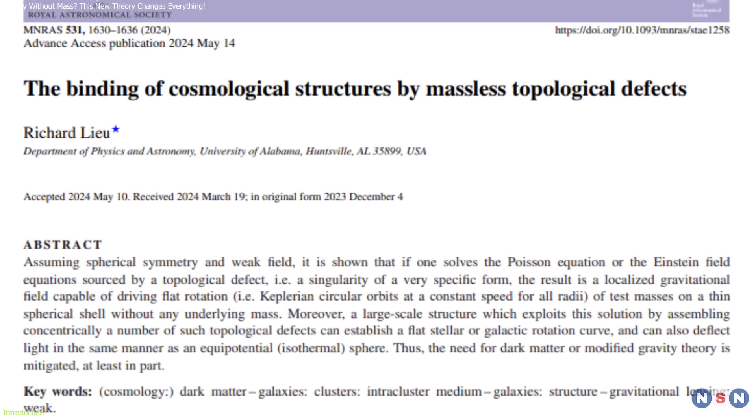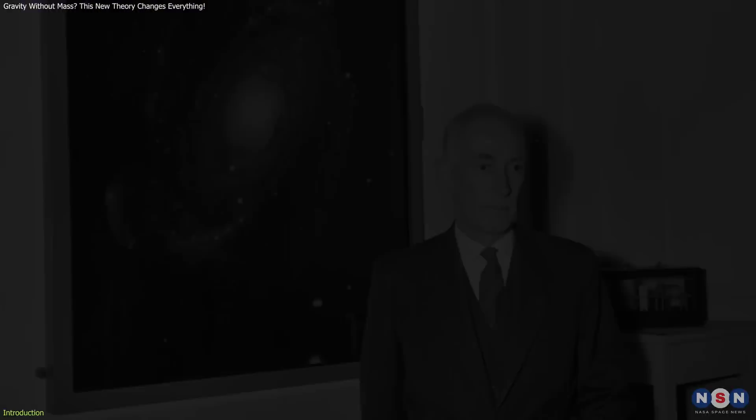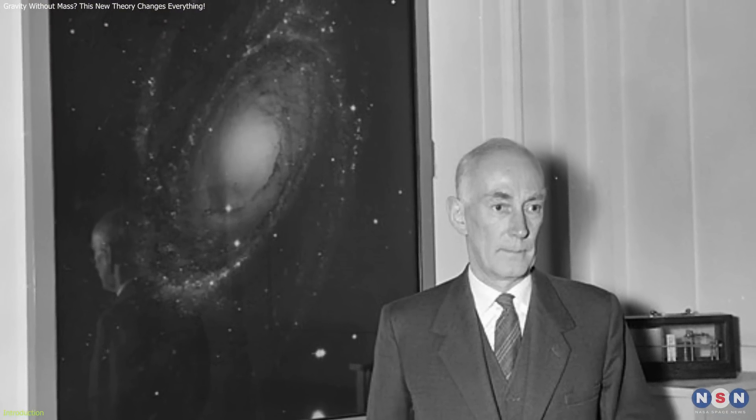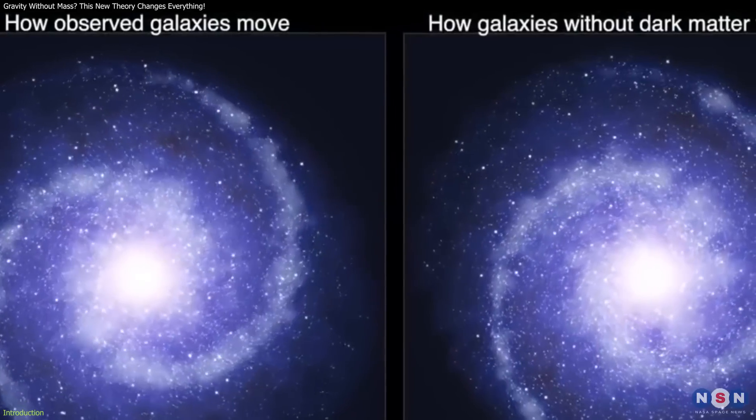This theory echoes a concept from 1932, when Dutch astronomer Jan Oort proposed missing mass as a way to explain how galaxies hold together. Liu's theory could eliminate the need for dark matter.